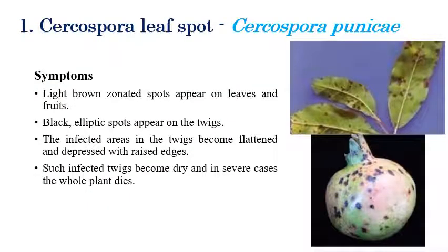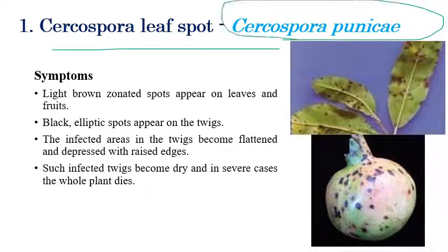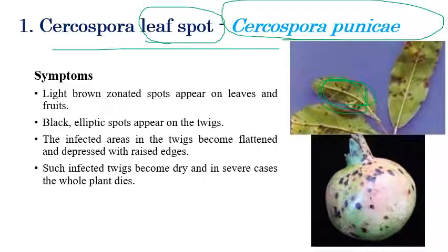The first disease is Cercospora leaf spot, caused by Cercospora punicae. As the name indicates, spots can be seen on leaves as well as on fruits. On leaves, we can clearly see light brown color spots, especially on the lower surface. These spots also appear on twigs and fruits. Initially, brown color spots appear on the lower surface of leaves, and later these convert into black color elliptical spots.